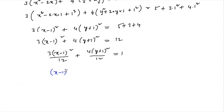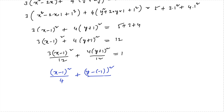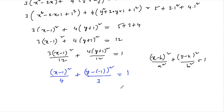This is in the standard form (x - h)²/a² + (y - k)²/b² = 1, where (x - 1)²/4 + (y + 1)²/3 = 1. Comparing, we get a² = 4 and b² = 3, and since a² > b², the major axis is along the x-direction.